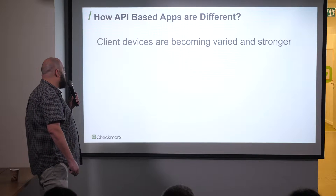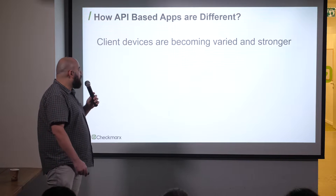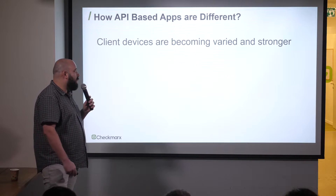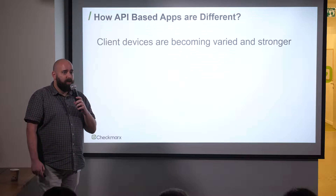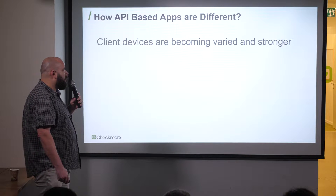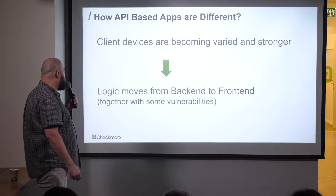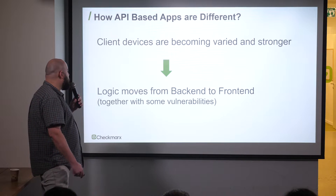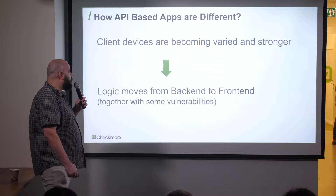How are API-based apps different? In the old days, a client would be a browser on a laptop or PC. These days, clients are becoming varied and stronger — it can be a browser, a watch, a mobile, an IoT device, a smart toaster, a B2B application, a microservice. It can be anything and everything, and it's hard to keep track of that. Since clients are getting stronger by themselves, we see that logic moves from the back end to the front end — a gradual process that brings its own baggage, with some vulnerabilities moving to the front end as well.